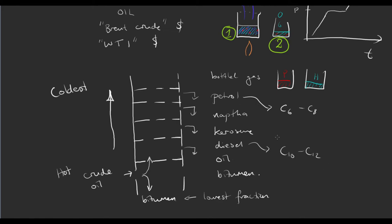Each fraction contains a range of lengths of carbon chains. Within the petrol fraction you get complexity — you could have a six-carbon and an eight-carbon chain, and both would come out in the petrol fraction. So fractional distillation doesn't totally separate alkanes, but it moves towards it. You can use fractional distillation to separate crude oil into rough fractions, and if you wanted to, you could keep going and do a fractional distillation of petrol itself to further separate out hexane, heptane, and octane.